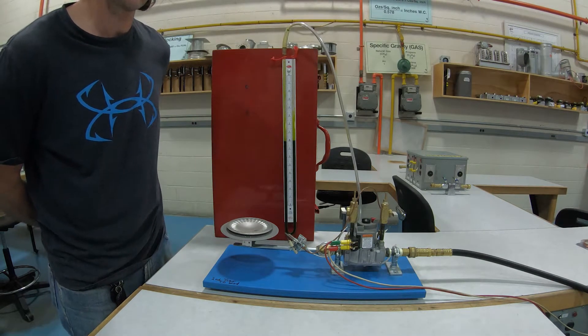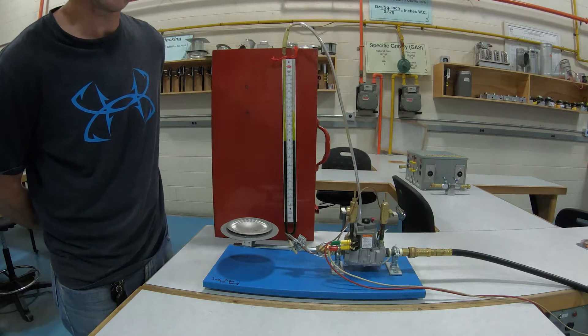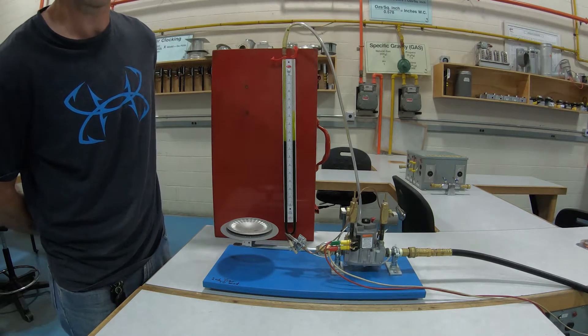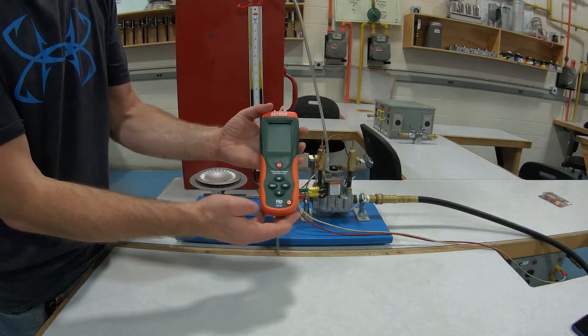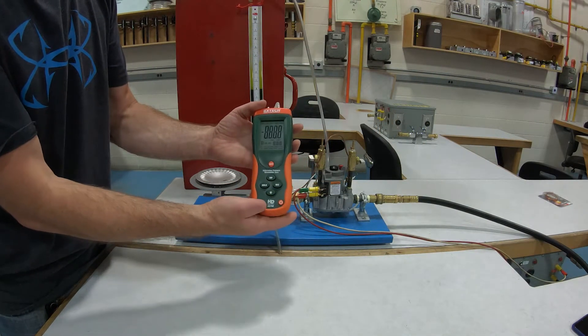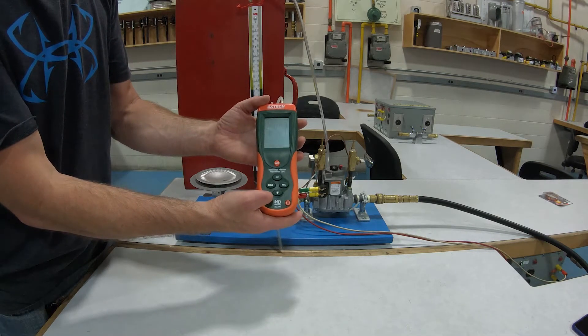Now this is the old style. You can build one of these yourselves if you have clear tubing and a piece of wood. I've done it myself, named it Eric, it was a good little manometer. So this is one of the many different types of a digital manometer. I'm gonna go ahead and turn this on.